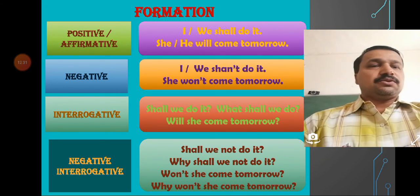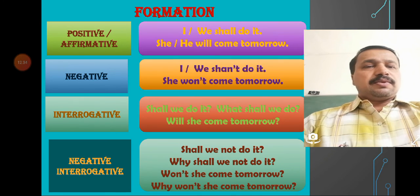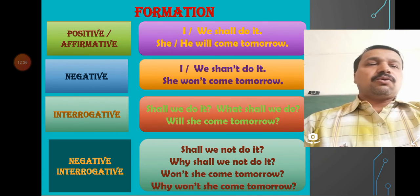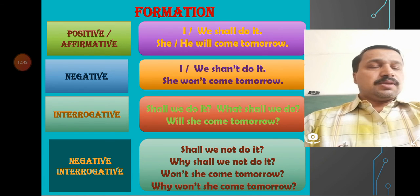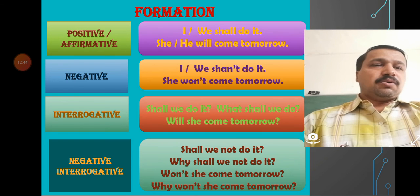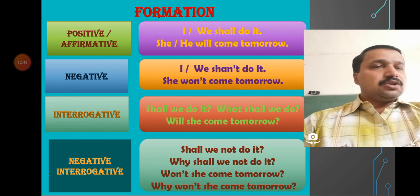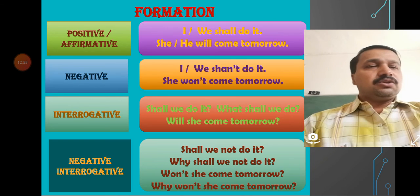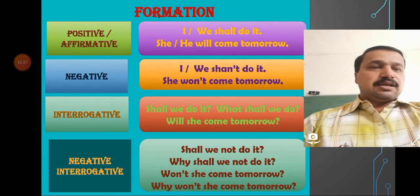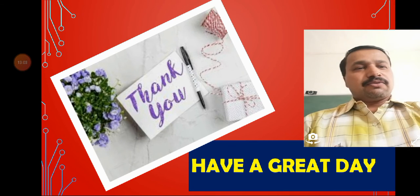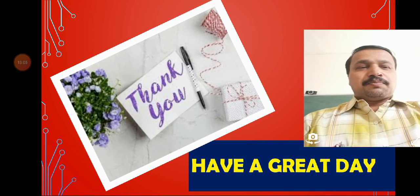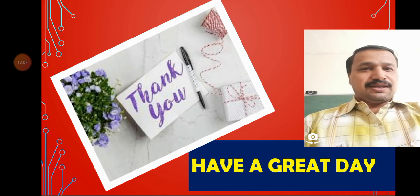For a negative interrogative, we add shan't or won't, or add not with the verb: shall we not do it? Or shan't we do it? Why shall we not do it? Or why shan't we do it? This is the end of the class. Thank you for watching this video. I would like to wish you a great day. Please share, like, and subscribe to our channel. Thank you.